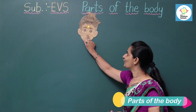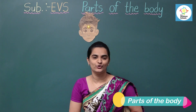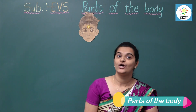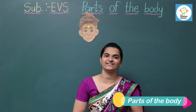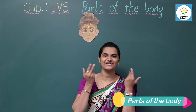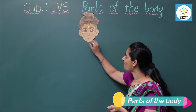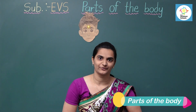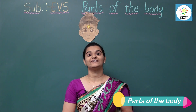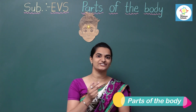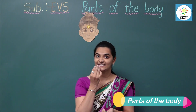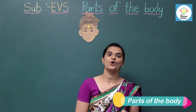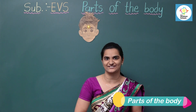Next is nose. We have one nose. We can smell with our nose. For example, when mom is cooking food, we can smell it with our nose. Next is mouth. Mouth includes teeth and tongue. We can eat with our teeth. And we can taste with our tongue. With our teeth, we can chew food, and with our tongue we can taste it.